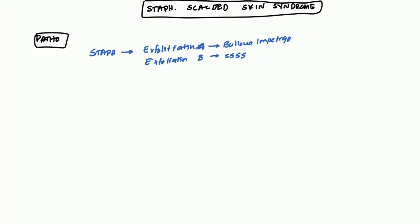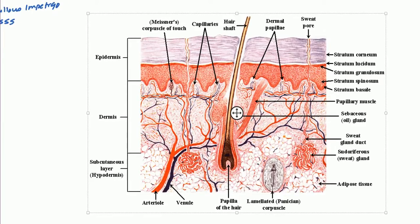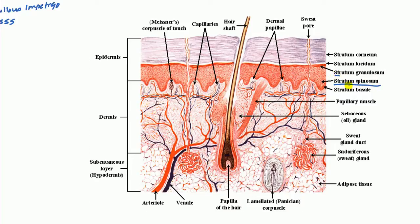So what does this toxin do? Well, this toxin attacks the epidermal layer of the skin. And so specifically, here we have a picture of the skin layers. It specifically attacks the Desmoglion 1, which is between the stratum spinosum and the stratum granulosum. So this area right here gets attacked by specifically the protein Desmoglion 1.